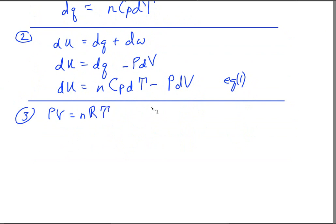We're going to take a derivative of both sides. So we'll have d(PV) is equal to the derivative of nRT.